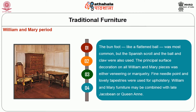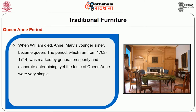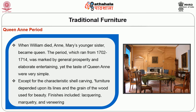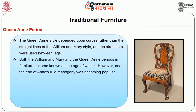The Queen Anne period: when William died and Mary's younger sister became queen, the period ran from 1702 to 1714 and was marked by general prosperity and elaborate entertaining. Yet the taste of Queen Anne was very simple except for the characteristic shell carving. Furniture depended upon its lines and the grain of the wood for beauty. Finishes included lacquering, marquetry, and veneering. The Queen Anne style depended upon curves rather than the straight lines of William and Mary style, and no stretchers were used between legs.